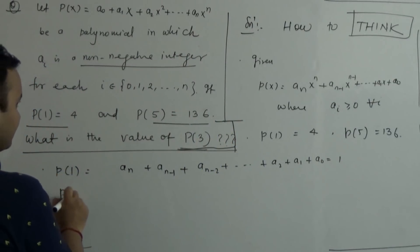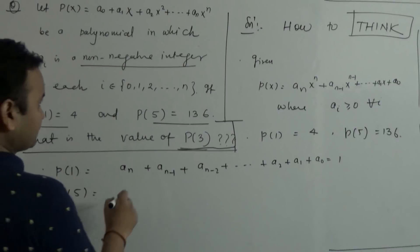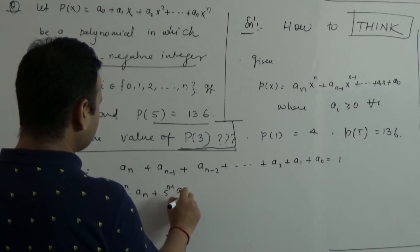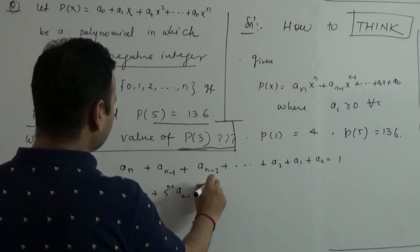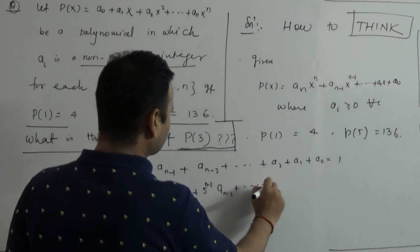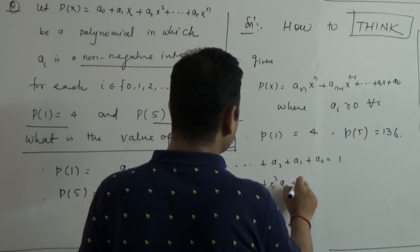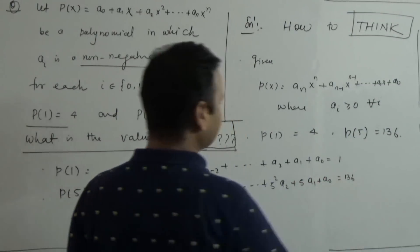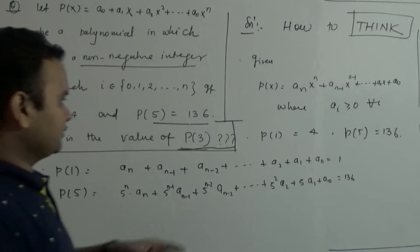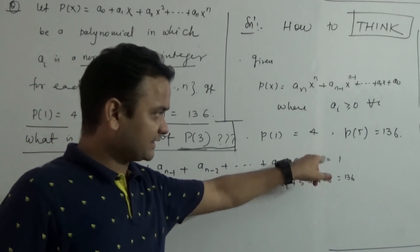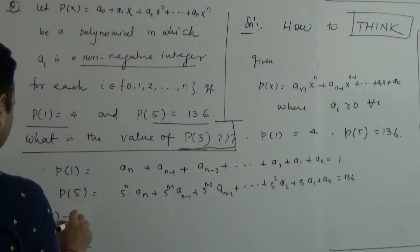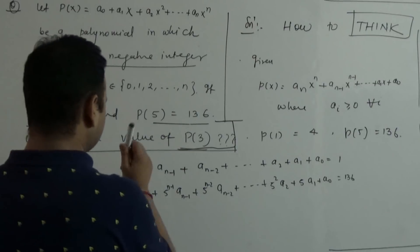And what is P(5)? When we substitute x=5 into the polynomial, we get: 5^n·A_n + 5^{n-1}·A_{n-1} + 5^{n-2}·A_{n-2} + ... and so on, equal to 136.